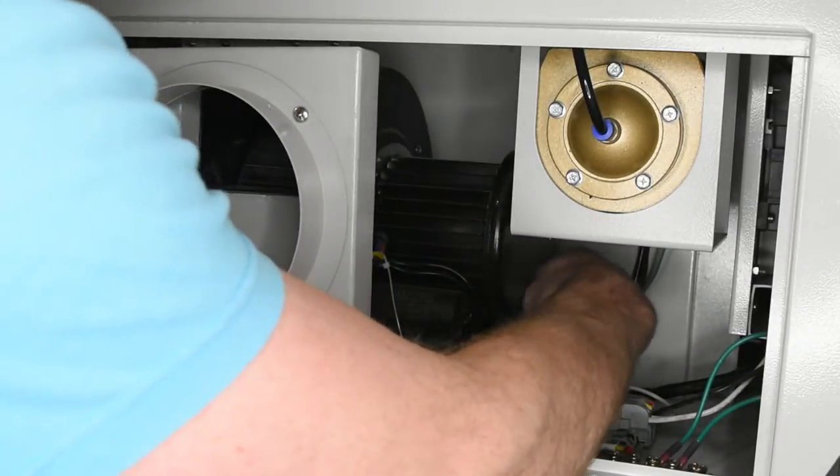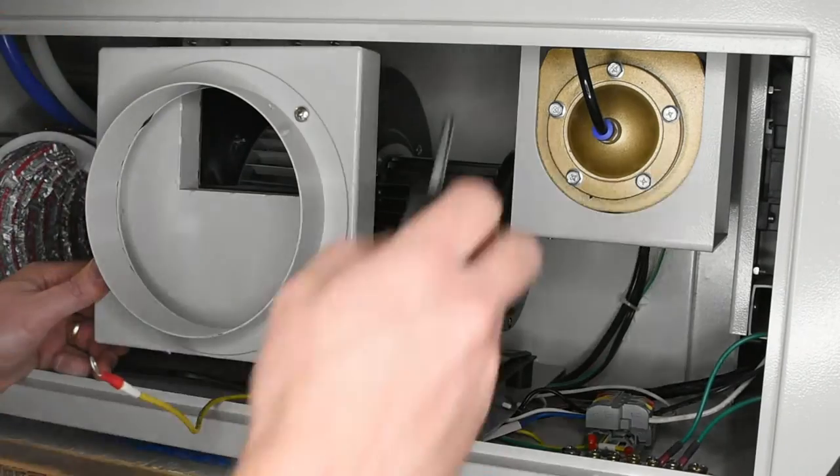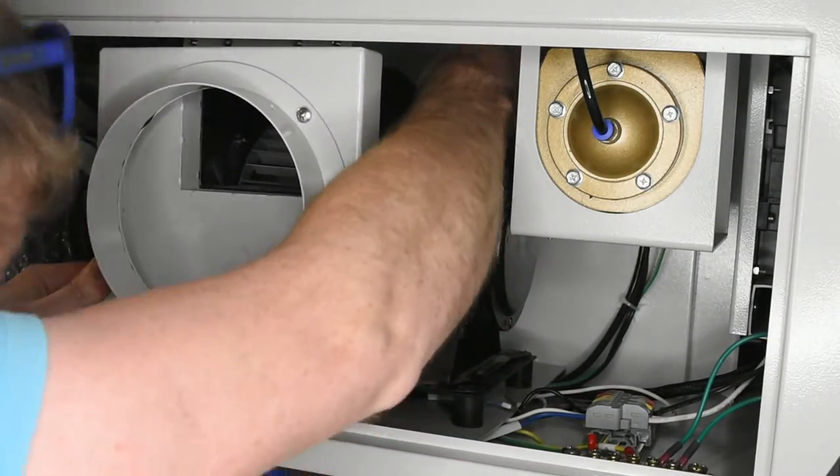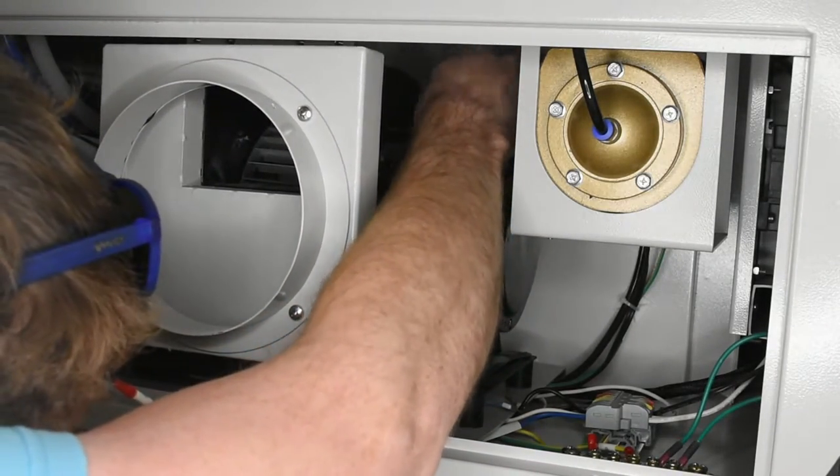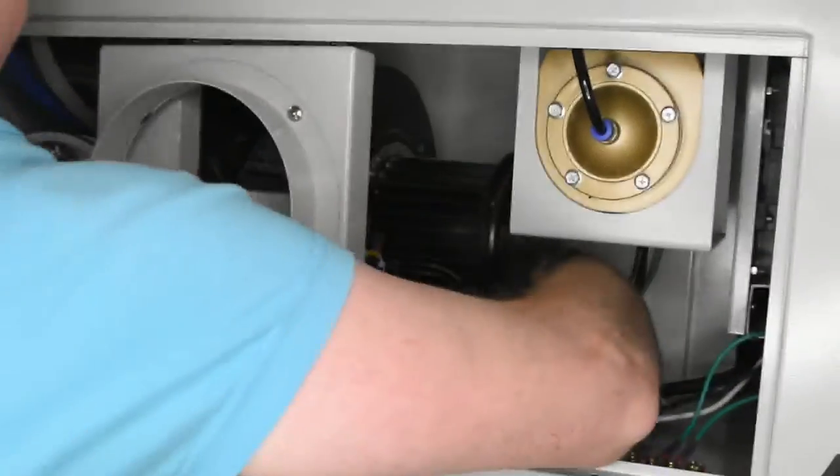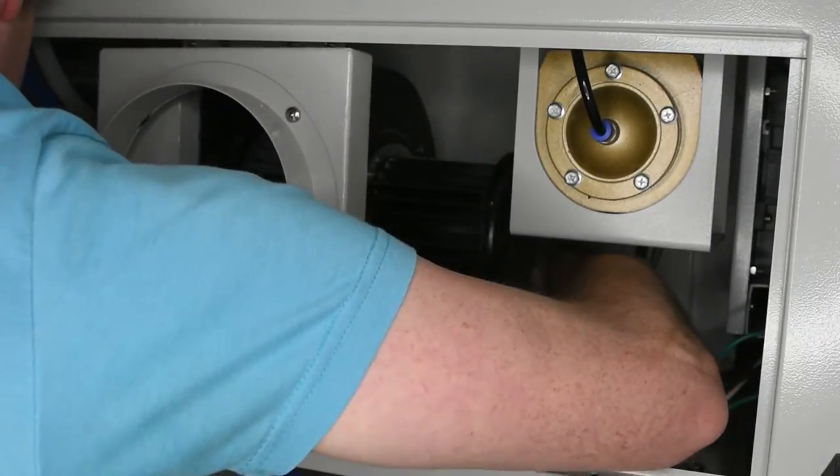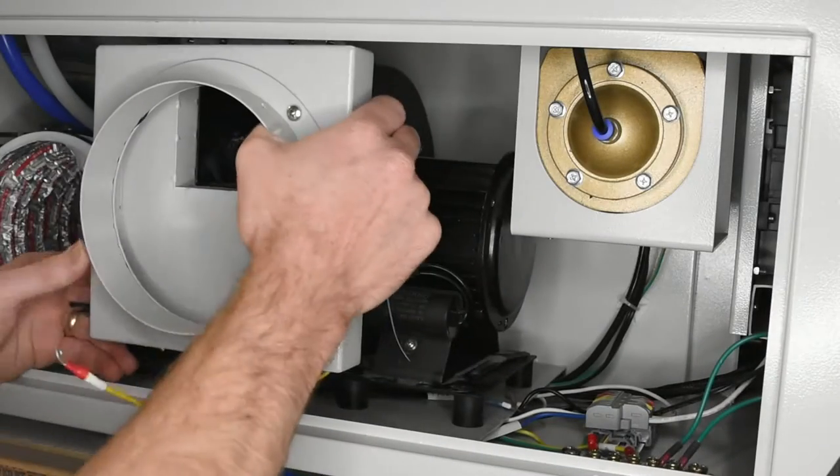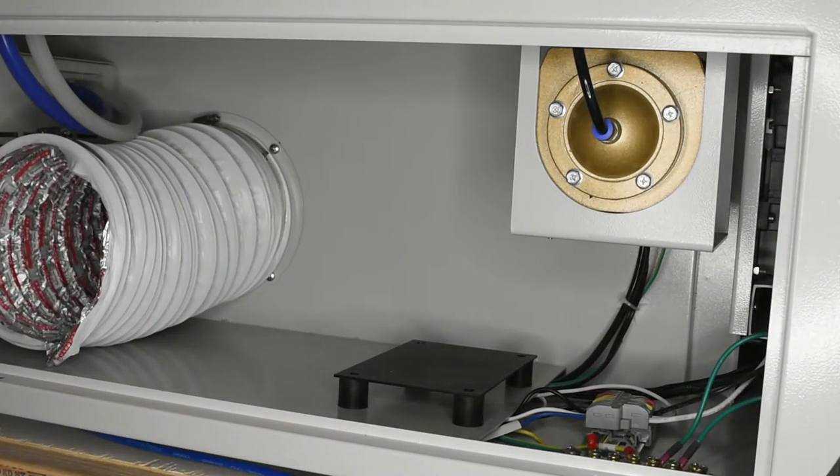Once we get that fully unscrewed we can go ahead and just pull that whole fan motor assembly out of the back of the cabinet there. So here I'm working on that fourth screw. Sorry that it's a little hard to see but it's kind of far back there. Once that's removed we can just pull all of that out of the way.